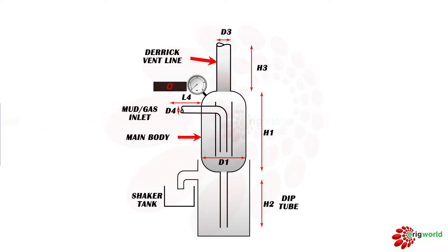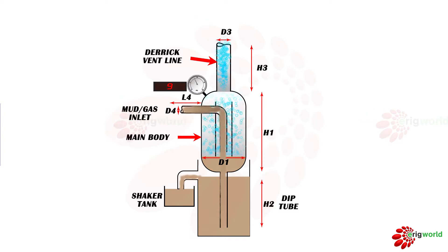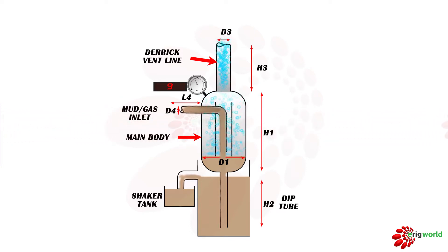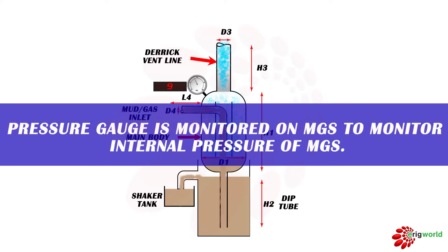Let's understand the working of MGS. As we know, MGS is connected to the choke manifold, so whatever fluid comes out of the choke will come into the MGS. Gas and mud come into the MGS system. Mud, being heavy, will settle down, pass through the deep tube, and go to the shaker. This system is generally used for free gas. Gas, being lighter, will evolve and pass through the vent line. A gauge is mounted on the MGS to monitor the internal pressure.